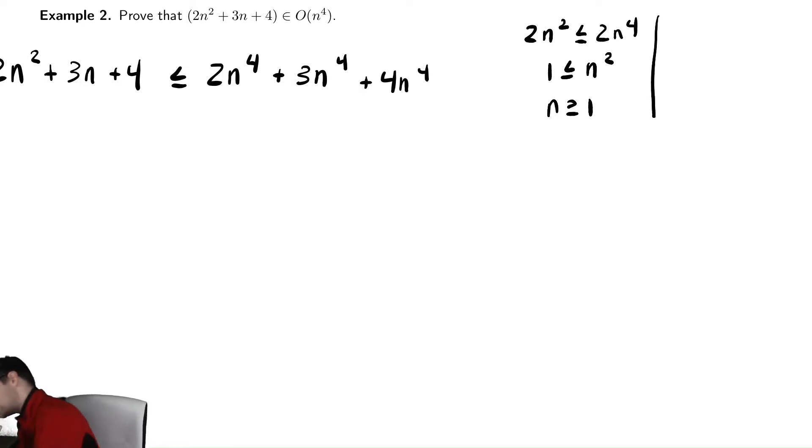We also need to do a similar claim for 3n less than or equal to 3n to the fourth. Divide by 3n, and we get 1 less than or equal to n cubed. Take a cubed root of both sides, and we have 1 less than or equal to n.